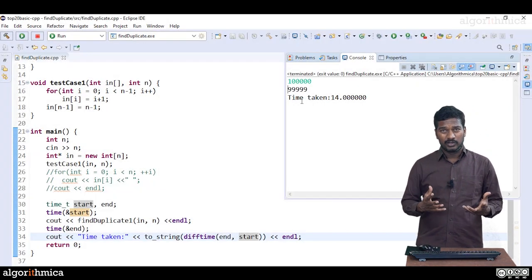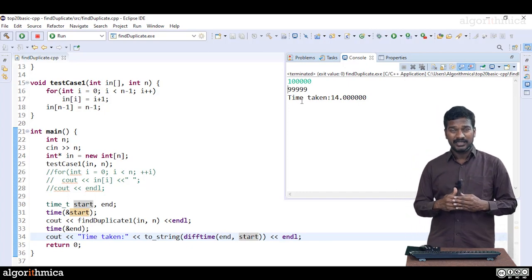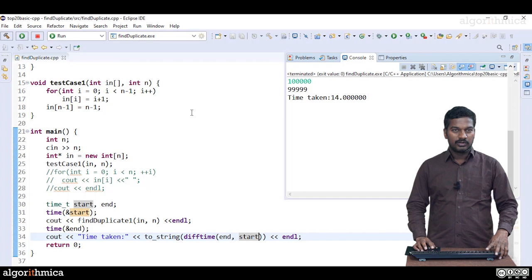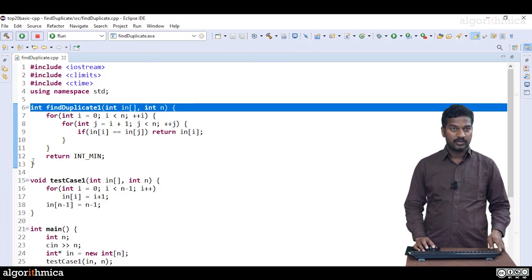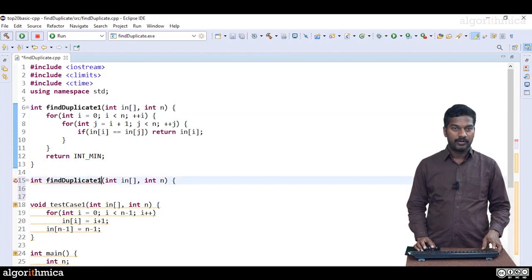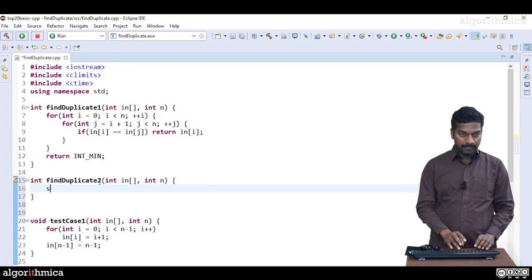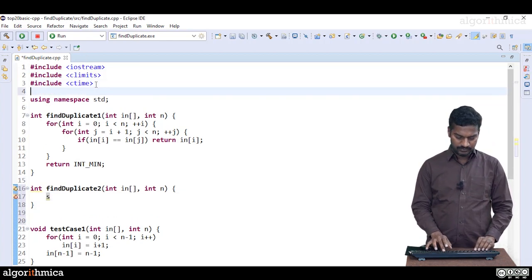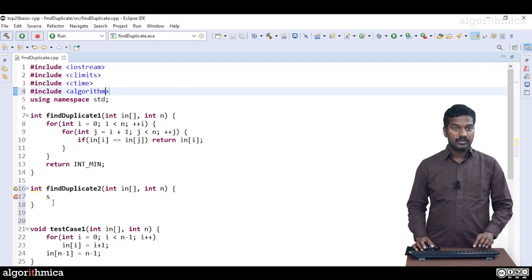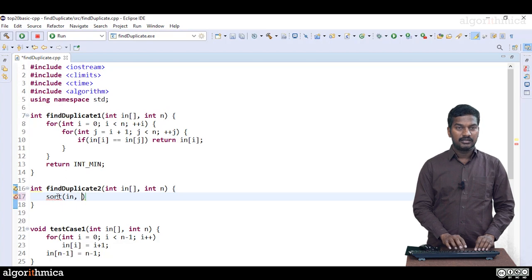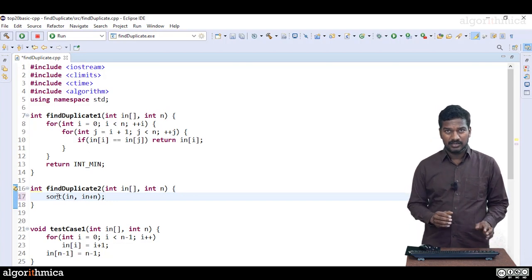Now we have seen the n log n solution theoretically. We are claiming that log n is far smaller compared to n. So let's see in practice how good the n log n algorithms actually perform. Let me create a copy of the duplicate prototype: find duplicate 2. Now what is the first step in our solution number two? First, to sort the array. So let me import an algorithm header file: include algorithm.